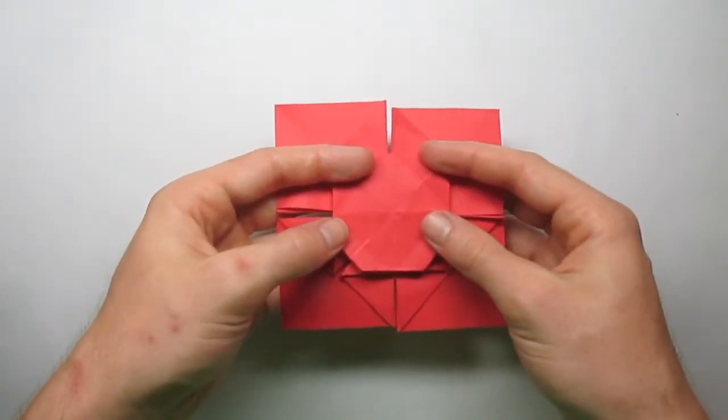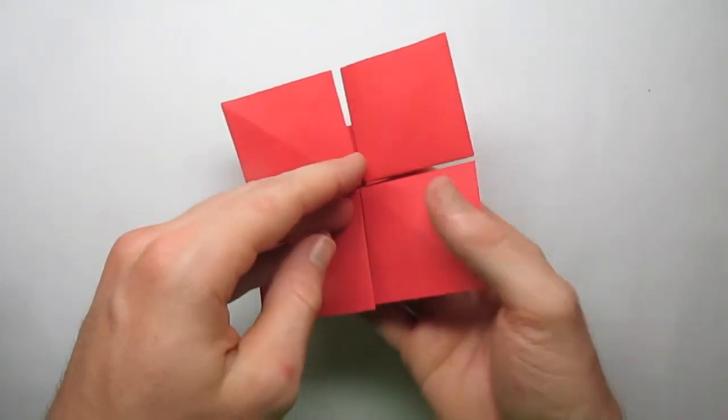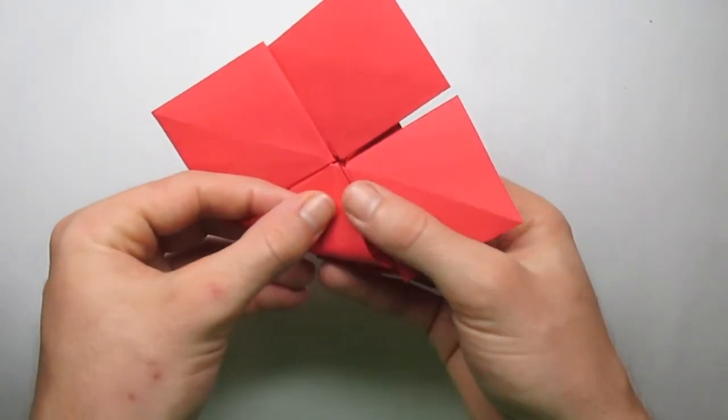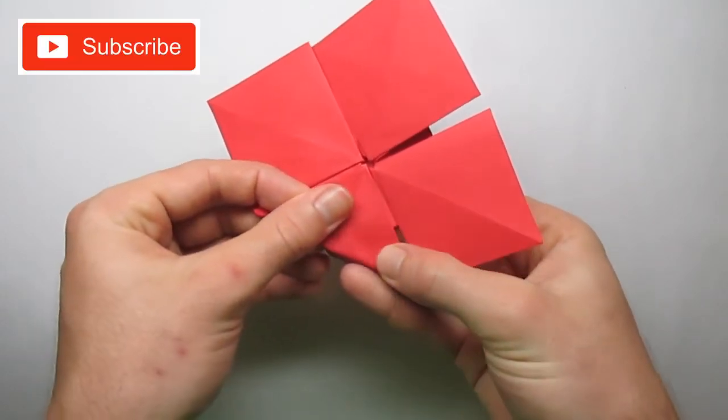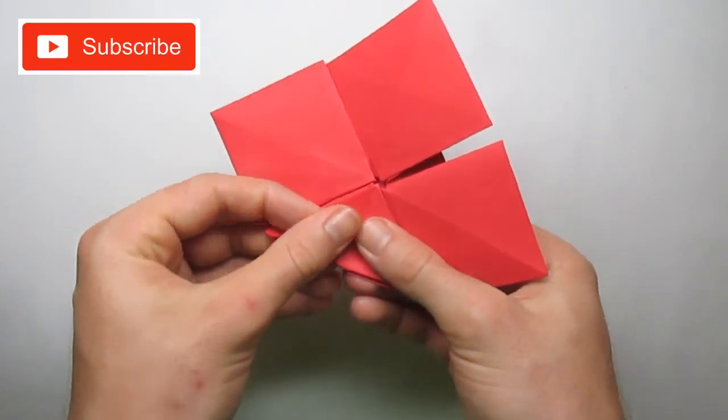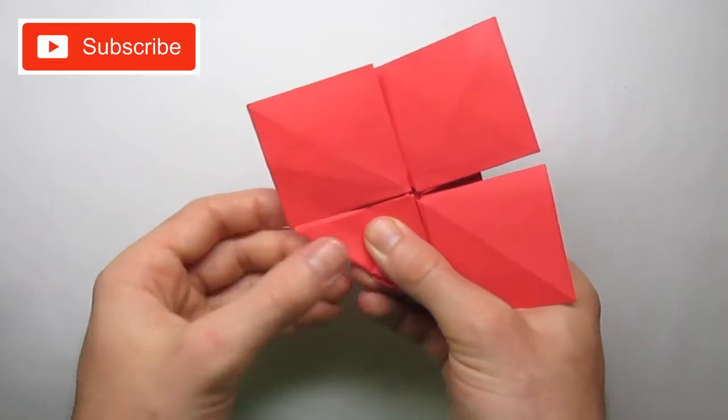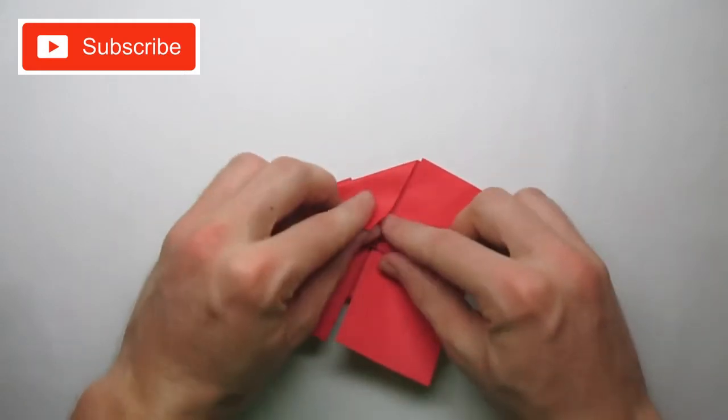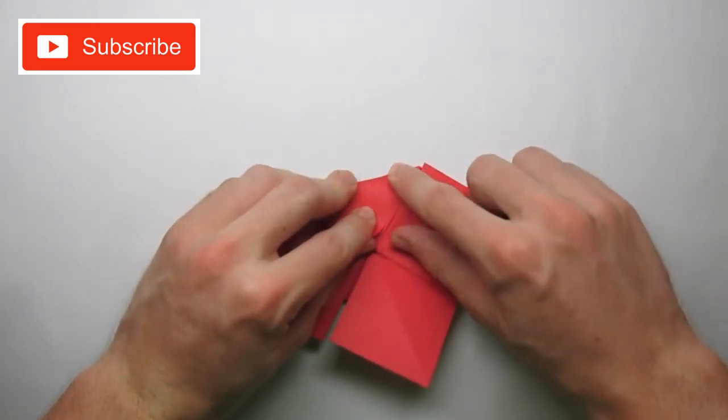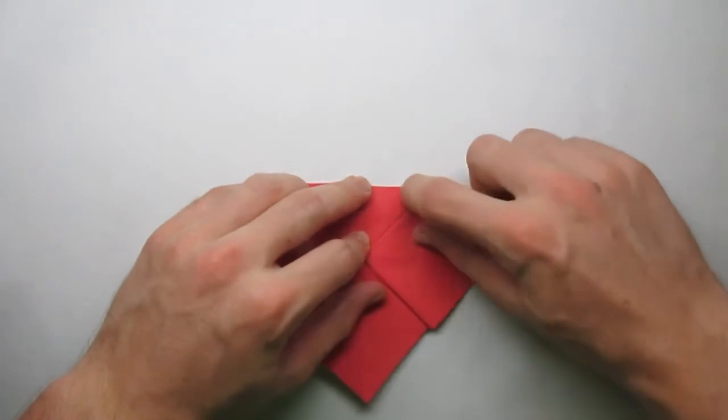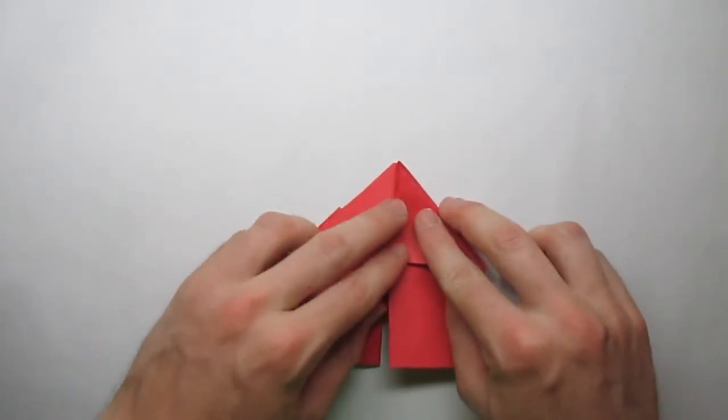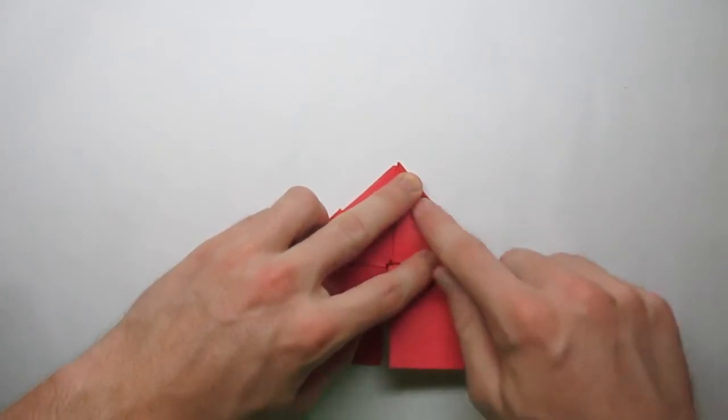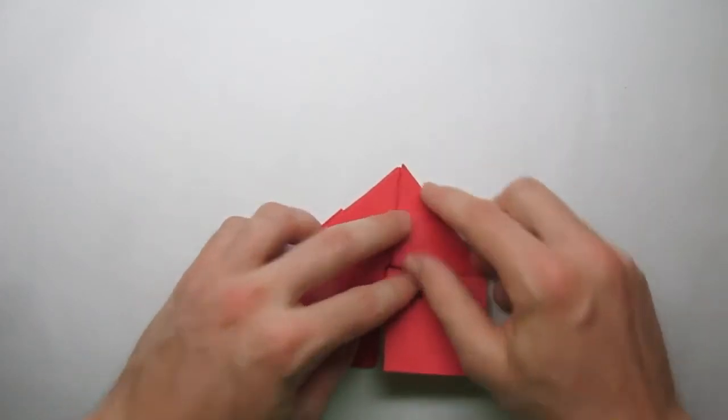Now the next step is we're going to work on the legs. So turn the model over and start here. Fold it to the center. Paper here. Just like this. Do that on the other part here.